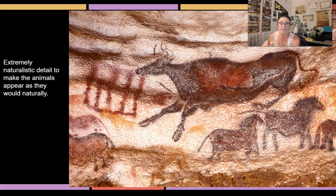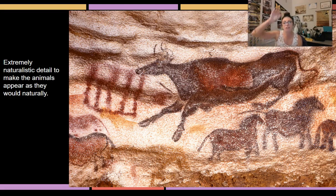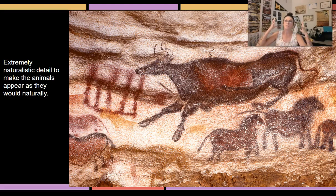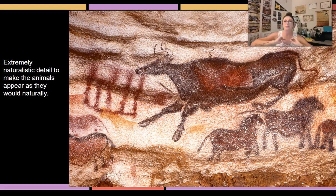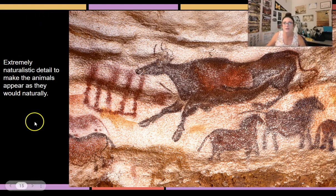The naturalistic detail is striking — you can see the color, the curve of the spine where it would dip in, and all the features in proportion to the body. Artists would even paint over jutting cave walls to make it look like ribs protruding, adding even more naturalism. They wanted these animals to look as natural as possible.